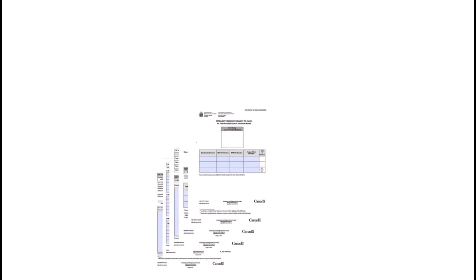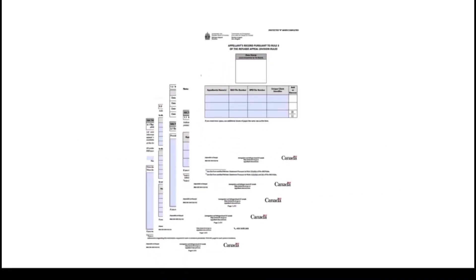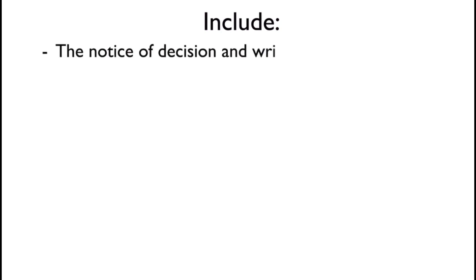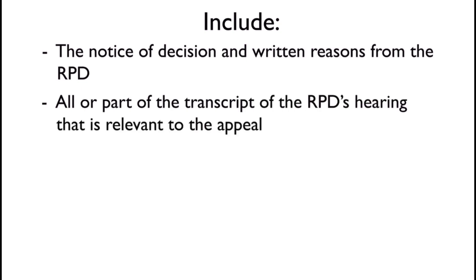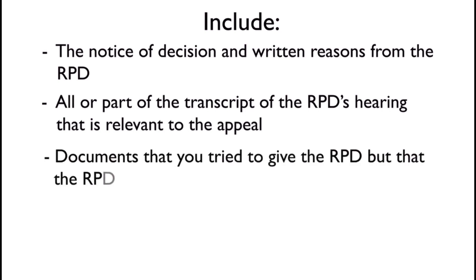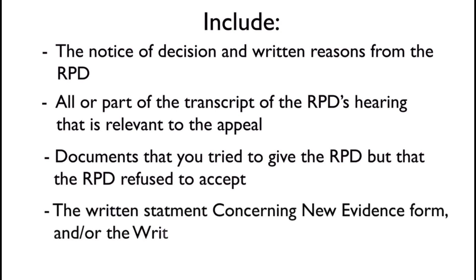Putting all your documents together. Once you have completed your Appellant's Memorandum, it is time to put all your documents together. The documents make up your Appellant's Record that you will provide to the RAD. You need to be sure that your Appellant's Record contains printed copies of the following documents in the following order: the Notice of Decision and written reasons from the RPD; all or part of the transcript of the RPD hearing that is relevant to the appeal.